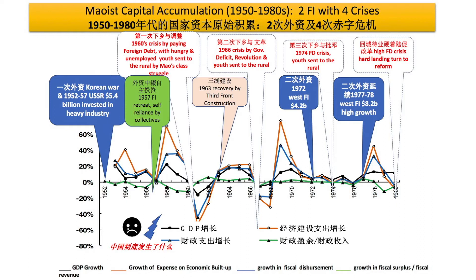In the mid-1970s, there were also political issues happening in China, but this lecture is focused on the economic crisis. The second time Western investments came into China in 1974, government investments decreased down to zero. Budget income also went below zero — it was minus.